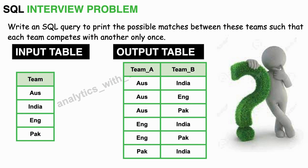This is the interview problem that we have. On the left side we have an input table. This input table has one column that is team, and we have four records in it: Australia, India, England, and Pakistan. Now we need to write an SQL query to print the possible matches that can happen between these teams, with the condition that each team will compete with another team only once. We need to print the output table shown on the right side, which has six records with all the possible combinations between these teams.